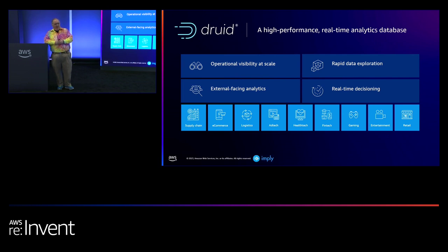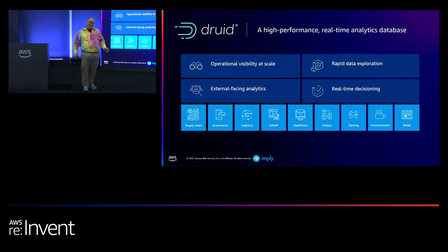A bit of Druid's history. In 2010, a group of developers at an ad tech company needed a solution that could ingest a billion events in less than a minute and query that billion events in less than a second. They tried Hadoop — couldn't do it. Hive — couldn't do it. Tried Postgres — couldn't do it. So, because they were young and maybe a little naive, they said, 'we'll just make a new database, how hard can that be?' It turned out it's actually kind of hard, but they did it successfully.